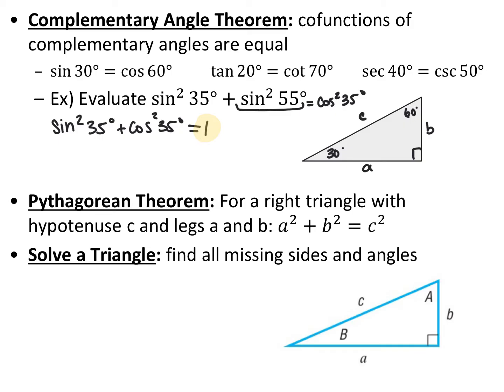The Pythagorean theorem says that if you have a right triangle, then A squared plus B squared equals C squared, where A and B are the two legs and C is the hypotenuse. To solve a triangle means finding all the missing sides and angles — six pieces of information: three angles and three sides. We use lowercase letters for sides and capital or Greek letters for angles. The opposite side is paired with the opposite angle, so side A is across from angle A, B across from B, and C across from C.